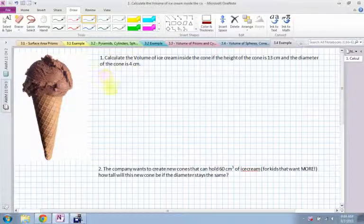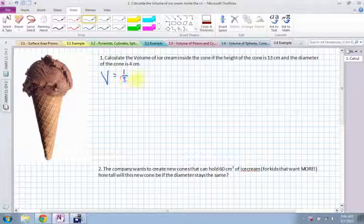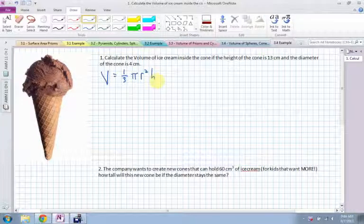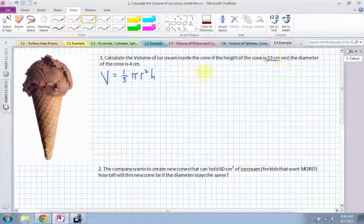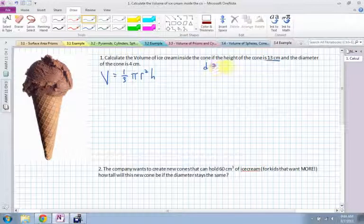So because this is a cone, we're going to use the volume of a cone, which is one-third times pi times r squared times h, which is the height. Now for this one, it tells us a couple of things. 13 is the diameter. Sorry, the height is 13. The diameter is actually equal to 4. The height is equal to 13.